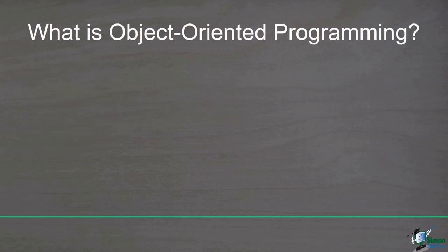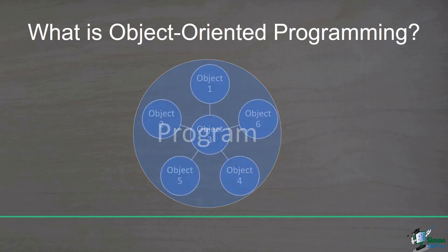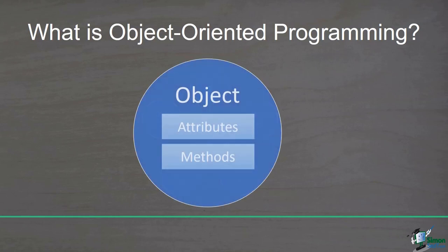Object-oriented programming, or OOP for short, is a computer programming model that, as you can guess from its name, breaks the program on the basis of the objects in it. An object can be defined as a set of attributes and methods. If you find this definition hard to grasp, don't worry. Later we will see lots of examples that will definitely help you to understand the concept.